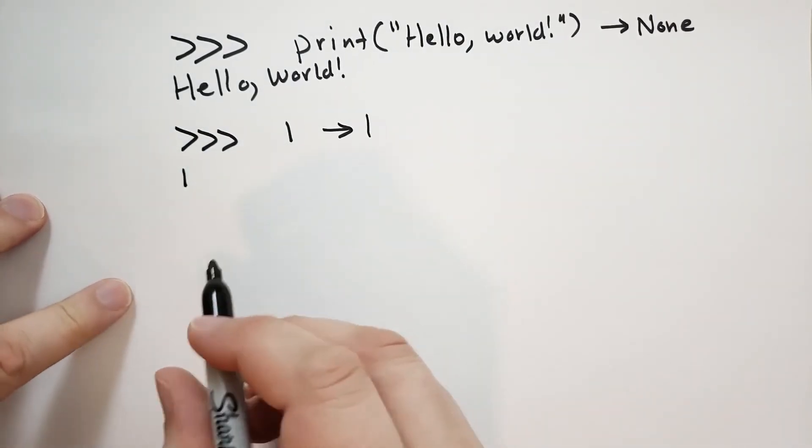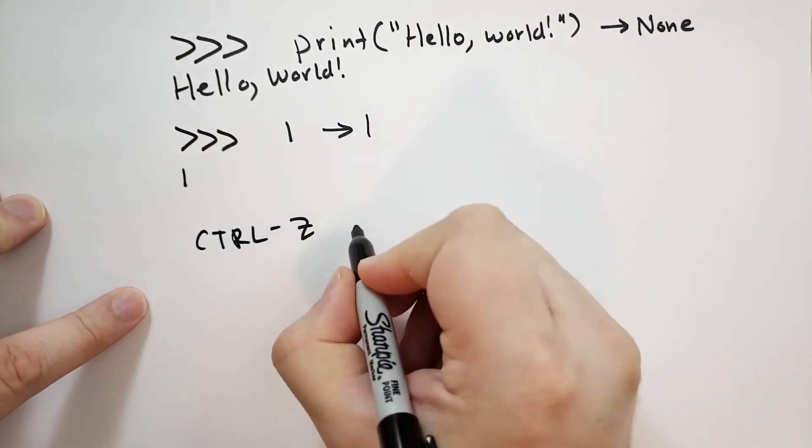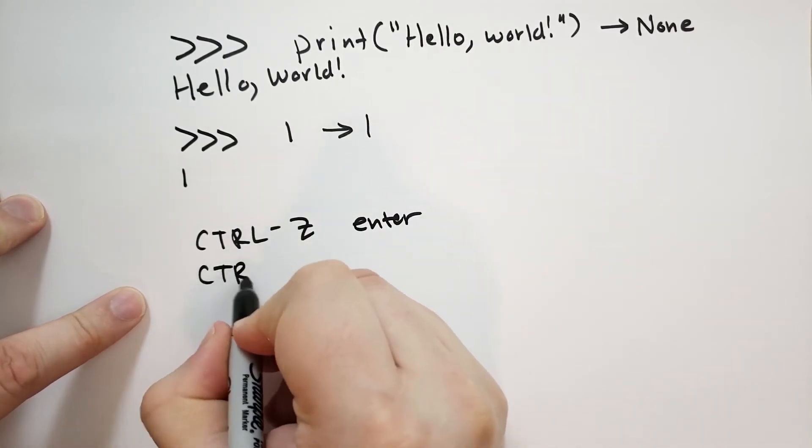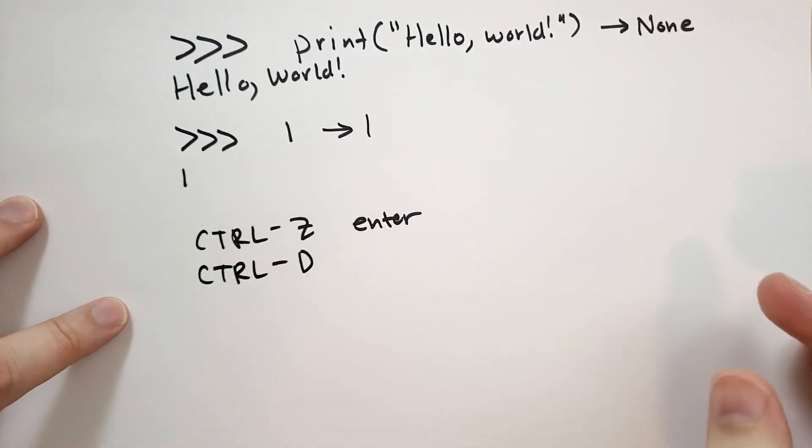When you're all done with interactive mode, you can leave through several methods. On Windows you can hit Control-Z and then enter, that'll get you out. And on Mac and Linux you should be able to hit Control-D and that should take you out of the interactive mode immediately.